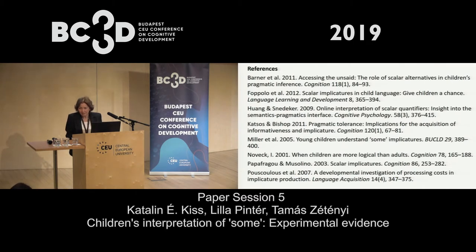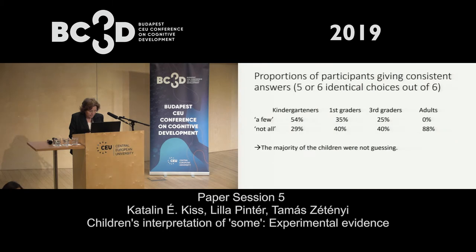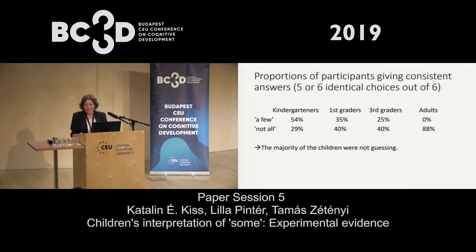Question from the audience about the first experiment: it seemed that about 30% of children consistently chose the partitive reading — is that higher than chance? Does it mean those kindergarteners already understand that reading? The speaker responds: yes, we have to conclude that one third of them are developing faster and have already acquired this plus-minus partitive distinction.